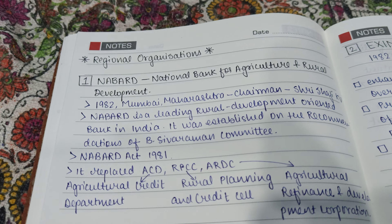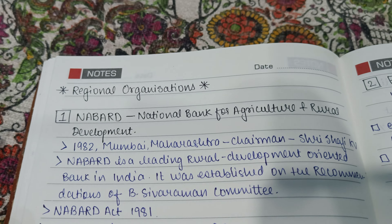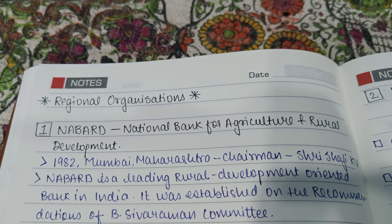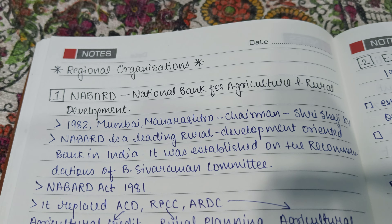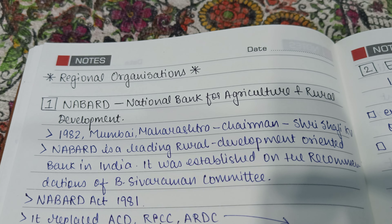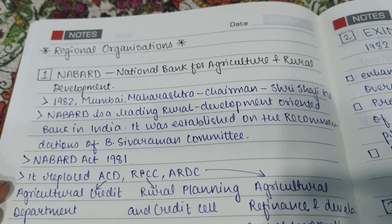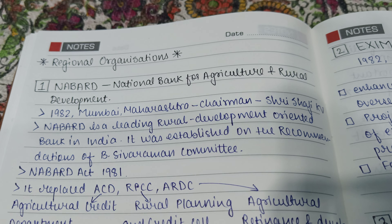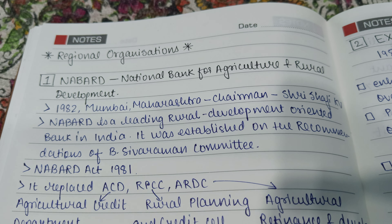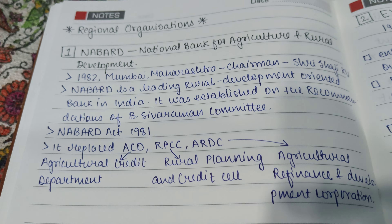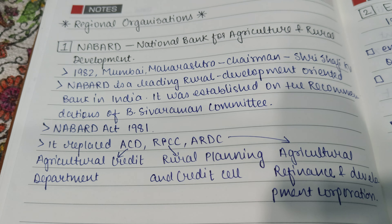These are handwritten notes and totally updated ones. NABARD stands for National Bank for Agriculture and Rural Development. It mainly focuses on agriculture and rural development. It was formed in 1982 with its headquarter in Mumbai, Maharashtra. The chairman is Shri Shaji K.V. NABARD is a leading rural development oriented bank in India. It was established on the recommendation of the B. Sivaraman Committee. The NABARD Act is 1981.